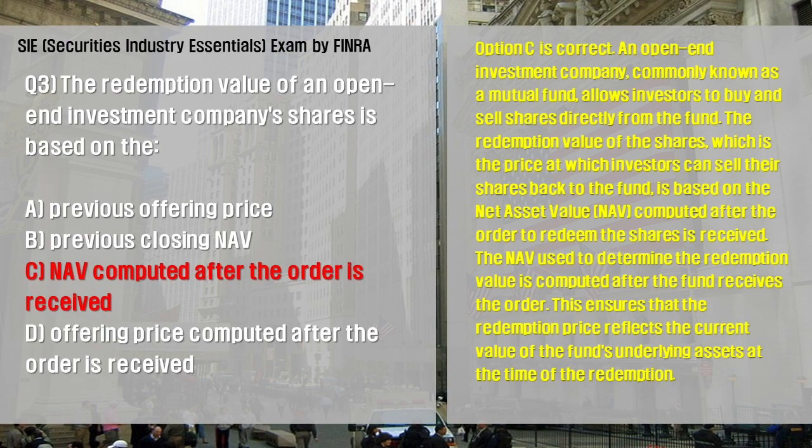Option C is correct. An open-end investment company, commonly known as a mutual fund, allows investors to buy and sell shares directly from the fund. The redemption value of the shares — the price at which investors can sell their shares back to the fund — is based on the net asset value computed after the order to redeem the shares is received. The NAV used to determine the redemption value is computed after the fund receives the order, ensuring the redemption price reflects the current value of the fund's underlying assets at the time of redemption.